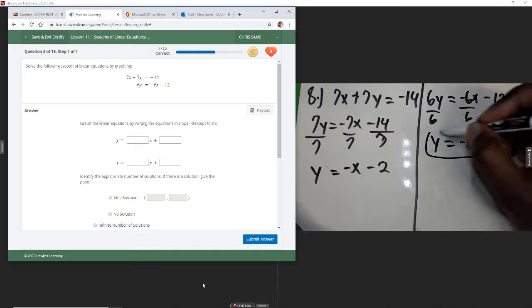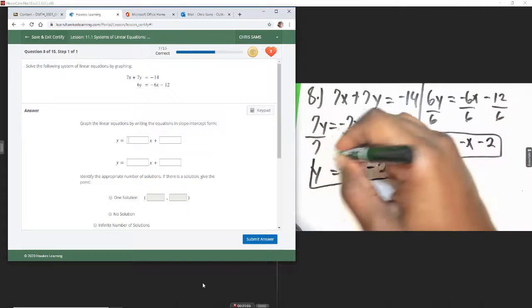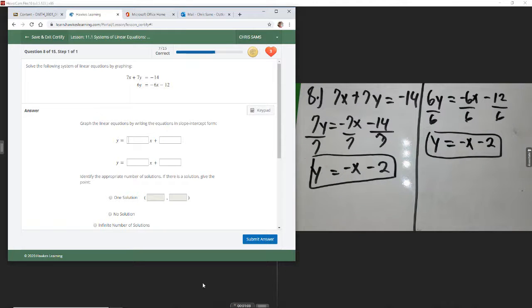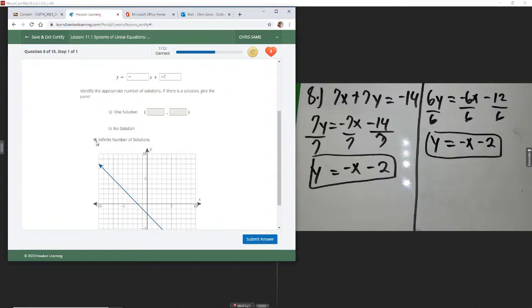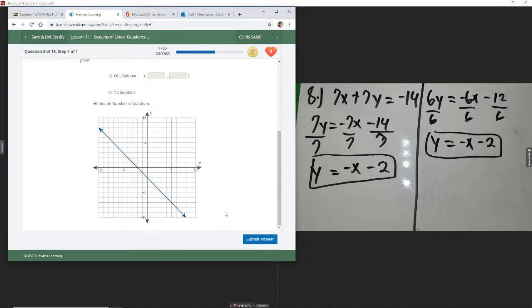So this time we get the same equation for both lines, negative x minus 2. We get the same line. There's an infinite number of solutions when you have the same line.